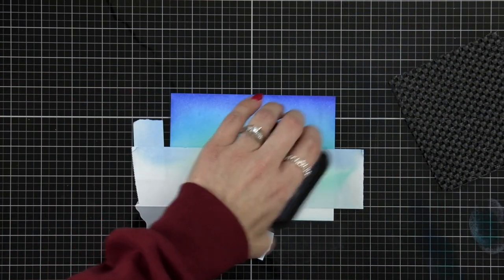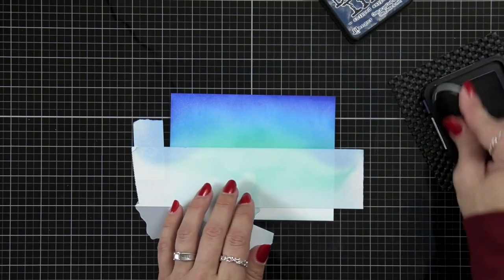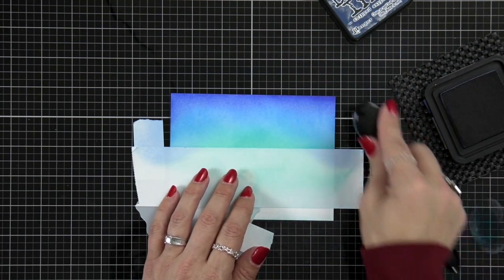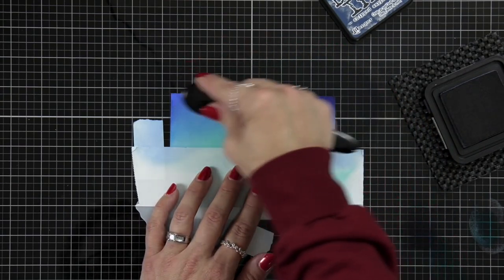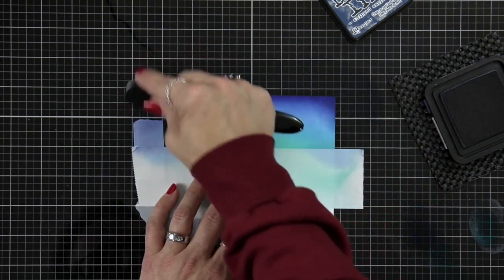So I'm bringing that blueprint sketch down into the salty ocean and then I'm going to really amp it up with a chipped sapphire. So for chipped sapphire I am going to start at the top and work my way down but I'm also going to kind of curve it around the edge of the cardstock.